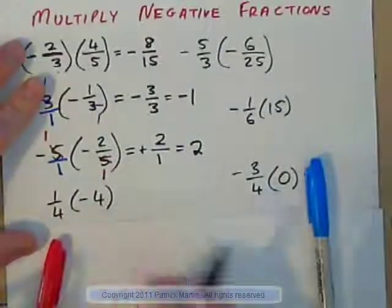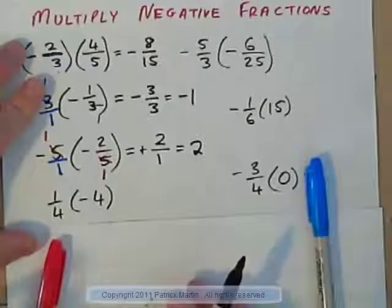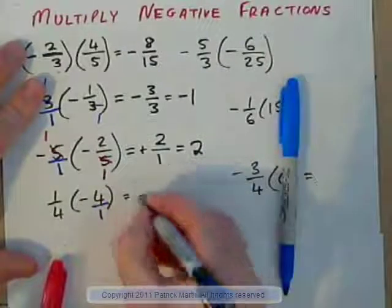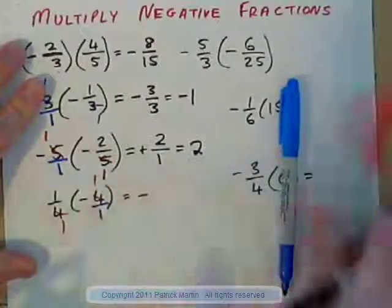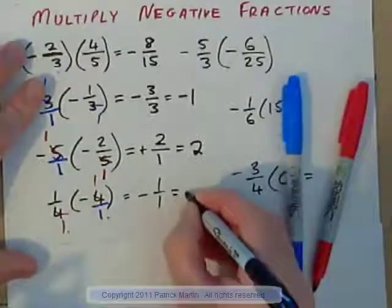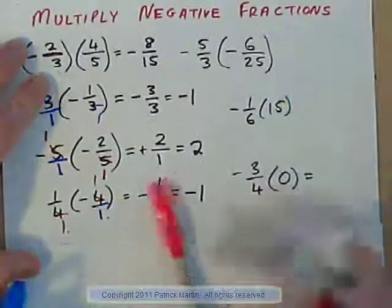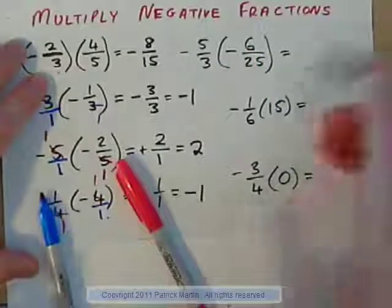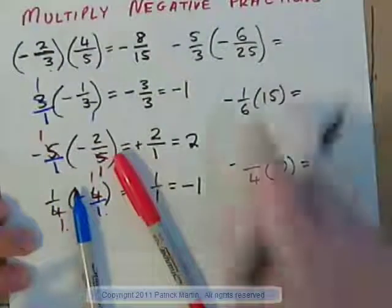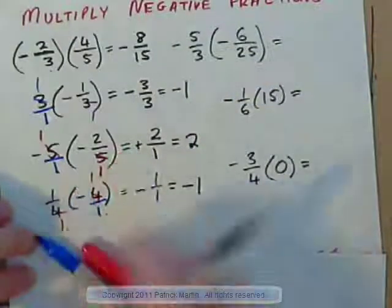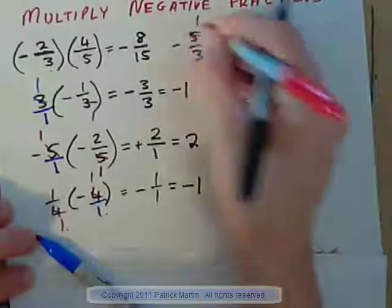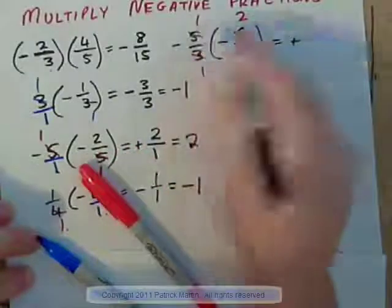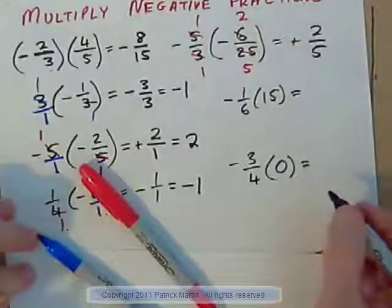Now you do this one: a quarter times negative 4. Turn that into 1/4 times negative 4/1. Positive times negative is negative. These 4s can cross-cancel — they leave 1s. 1 times 1 is 1, over 1 times 1 is 1: negative 1/1 gives negative 1. Now do these ones — press pause and see if you can figure these out. Negative times negative is positive. 5 into 5 goes once; 5 into that goes 5 times. 3 into 3 goes once; 3 into 6 goes twice. 1 times 2 is 2, over 1 times 5 is 5: that's positive 2/5.